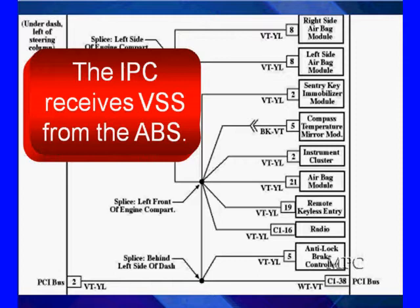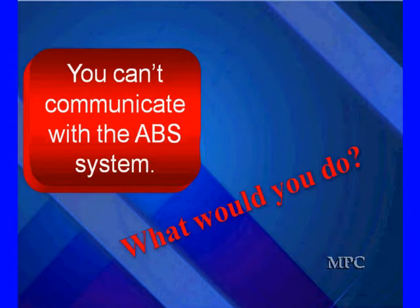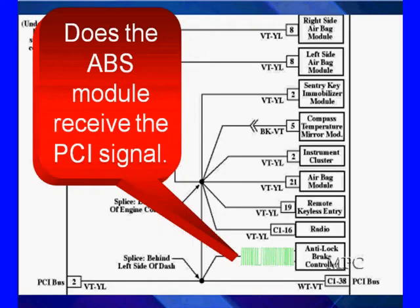The IPC receives VSS from the ABS module. So what we do, what we find out here is we check around, we can't communicate with the ABS module. We have a U-code. If you've got a U-code on the ABS module and it can't communicate, what would you do? This is where most of the standard diagnostics fall down on you because they don't give you a good reading on that.